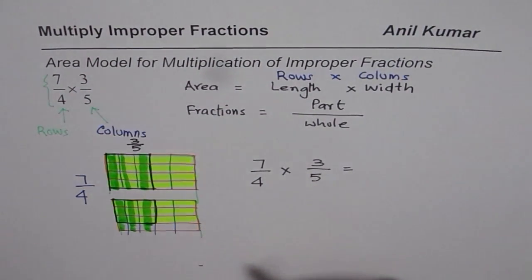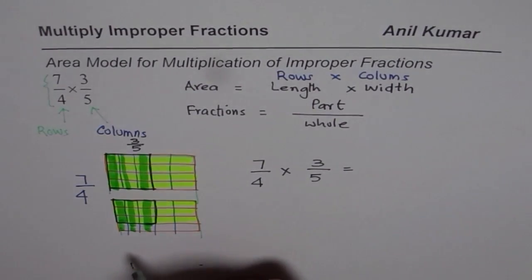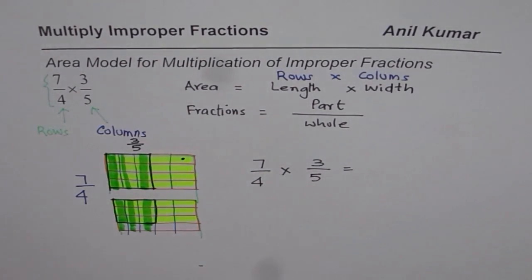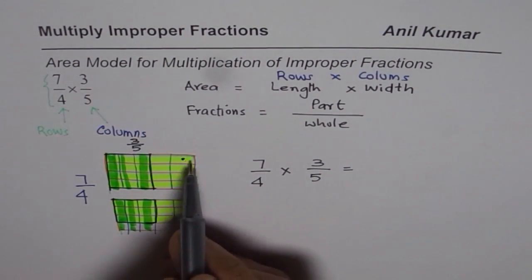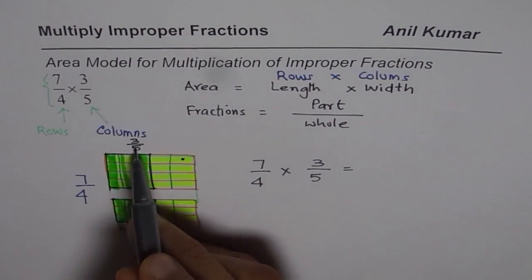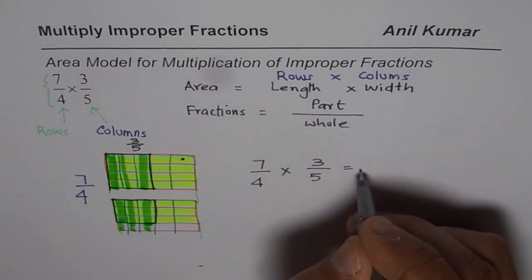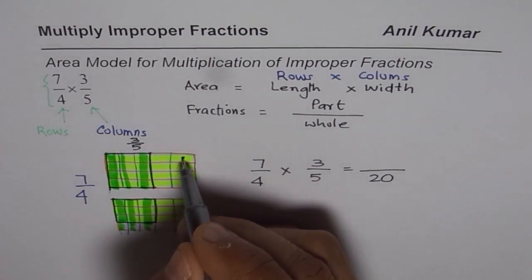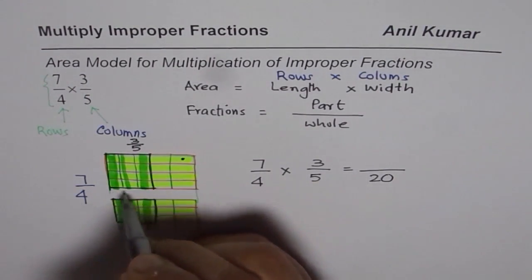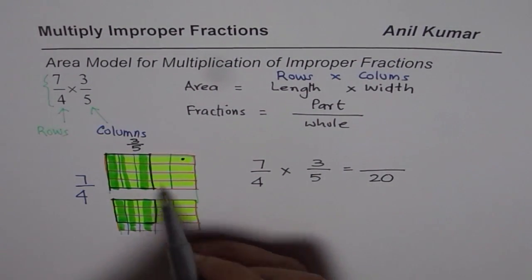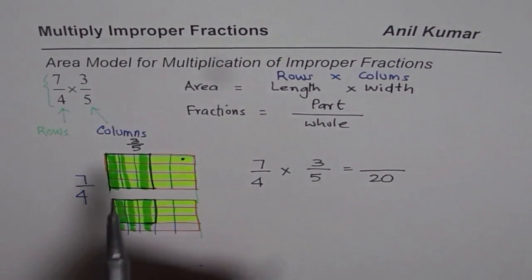Now how much is that? For that we have to understand what this small unit is equal to. So how many units like this are there in one rectangle? 4 times 5, 20 units. So the denominator is 20. Number of these units in one rectangle. Out of 20, how many did we shade? Let's count them.